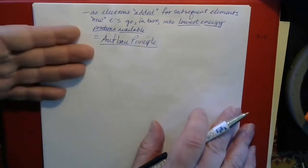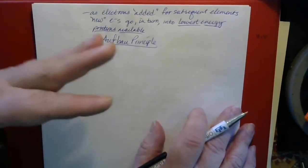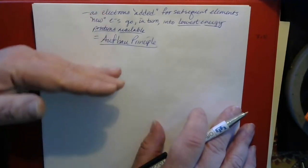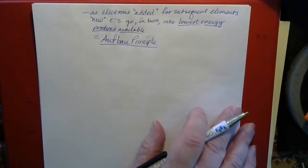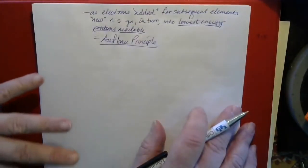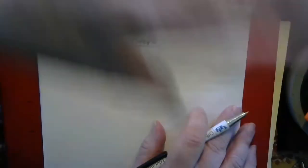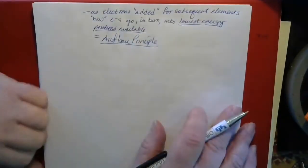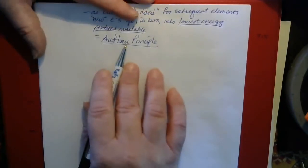The Aufbau principle is basically building up your electron configuration from the ground up by putting electrons in the lowest energy positions available, and when that's filled, going to the next lowest and the next lowest. It's kind of like piling bricks on top of each other to build a building — you put the first row of bricks in, and when that's filled, you put another layer on because that's the next lowest potential energy position.